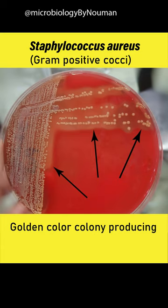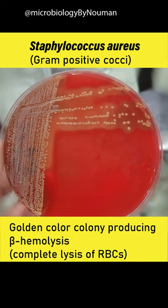The golden color colony is a big indicator of Staphylococcus aureus growth on a culture media plate. Staphylococcus aureus also produces beta hemolysis, which means they completely lyse red blood cells around their colonies and produce a clear zone of hemolysis.